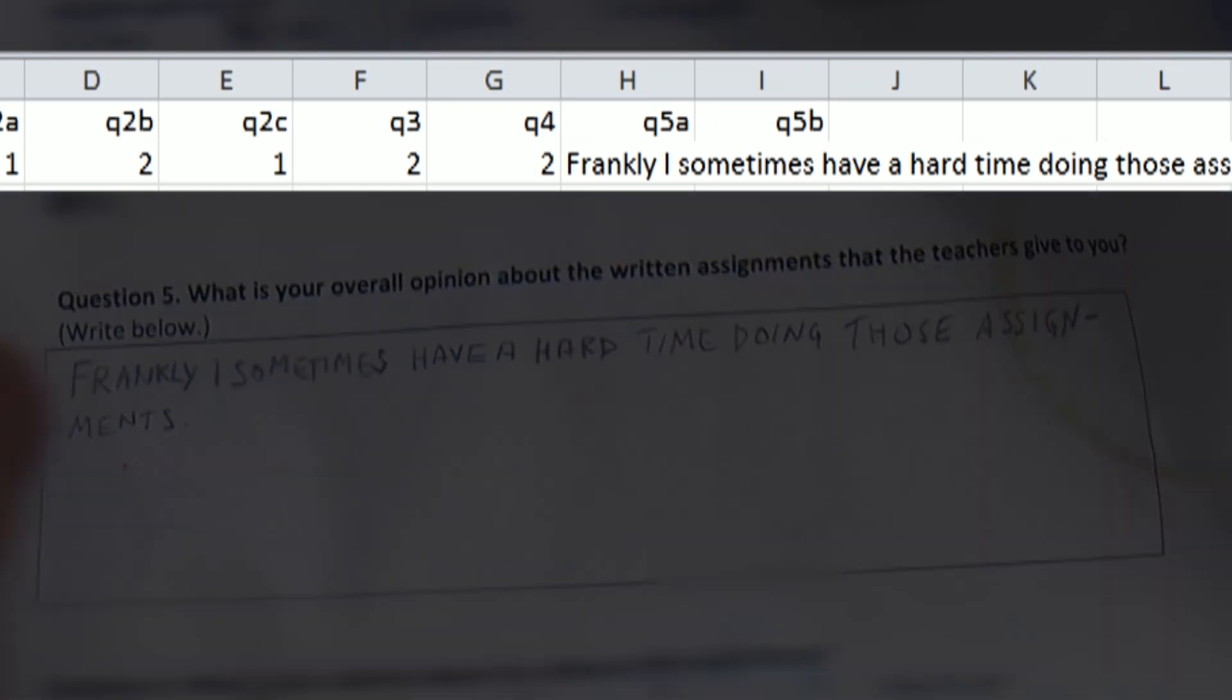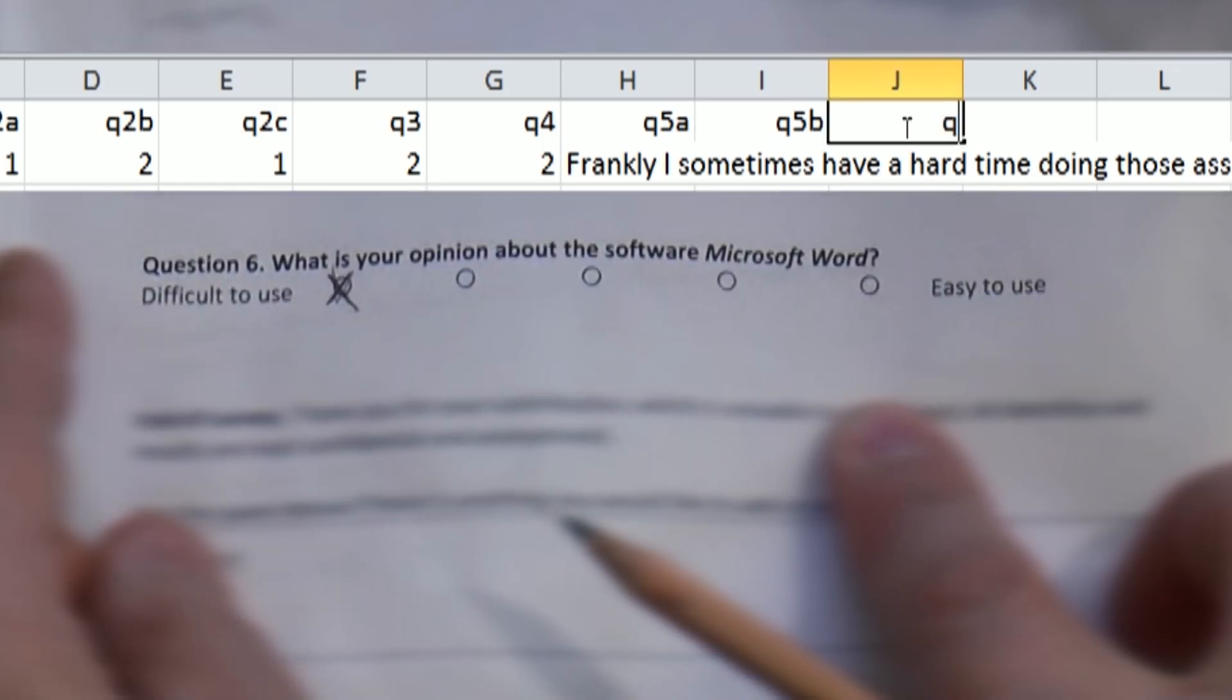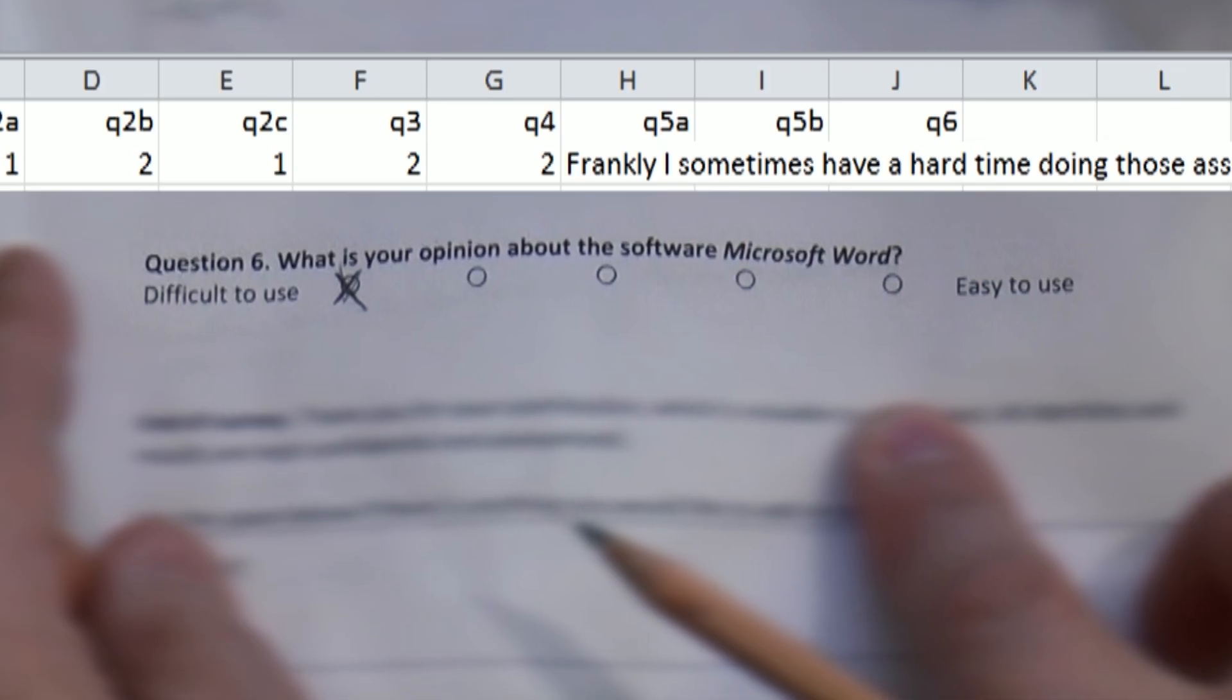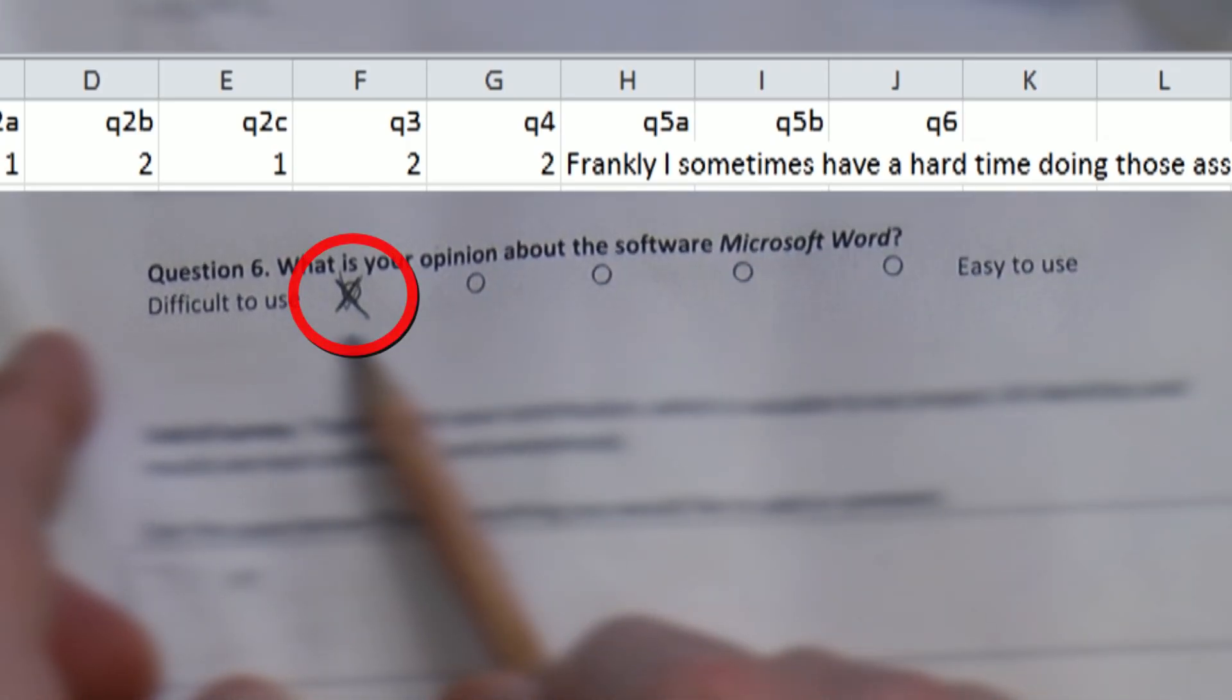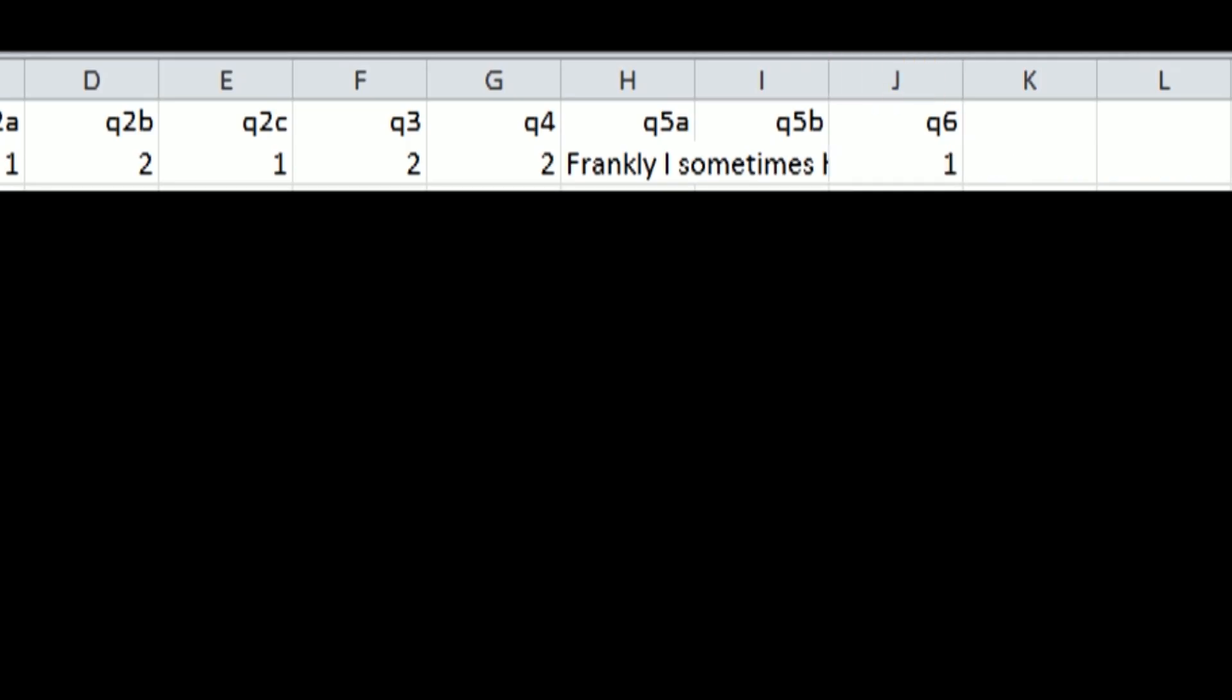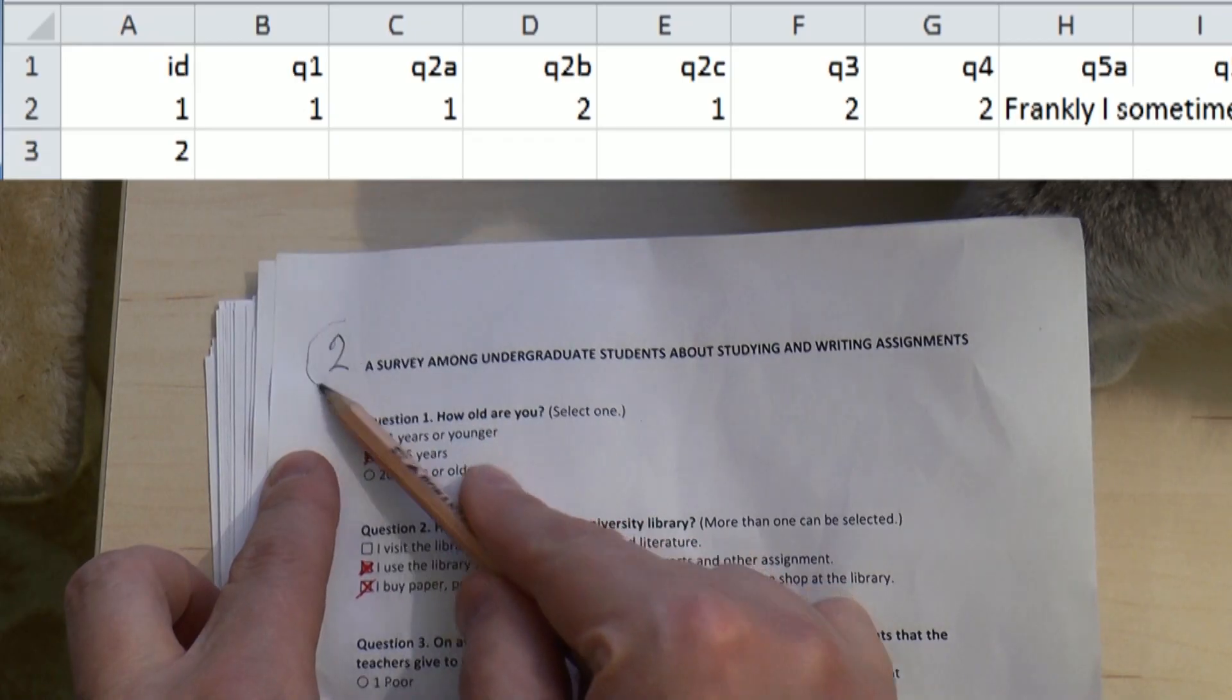And question 6 is, as you can see, a so-called semantic differential. For this respondent I code it with the digit 1. Okay, that concludes the first questionnaire. Let's do the second one together.